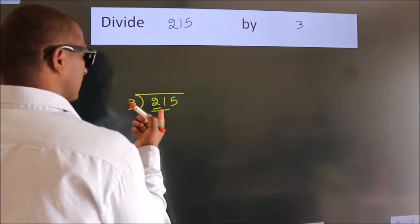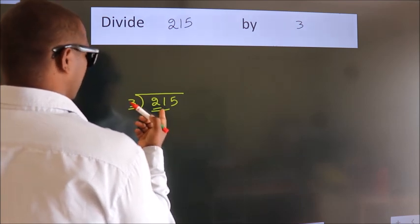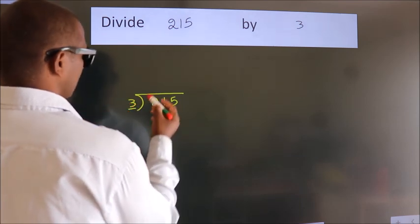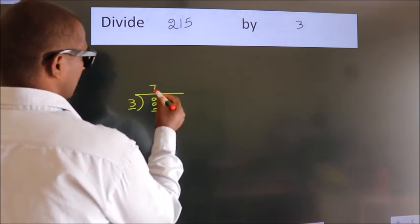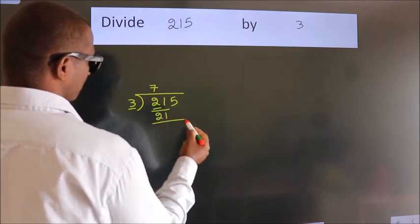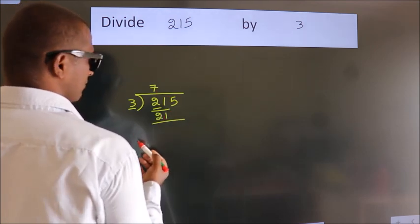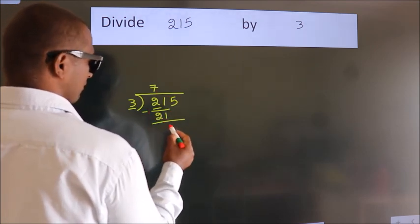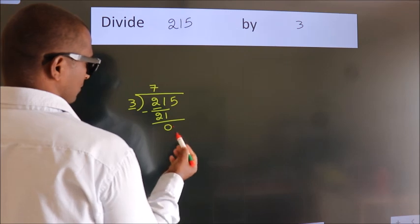When do we get 21? In the 3 times table: 3 sevens are 21. Now we should subtract. We get 0.